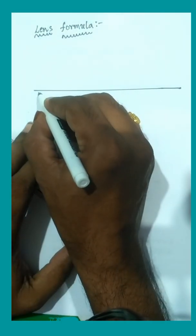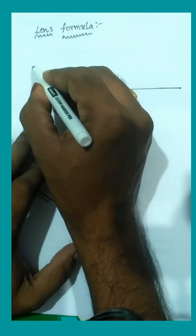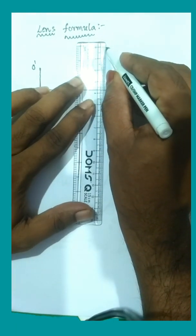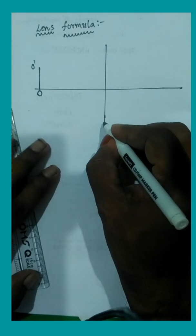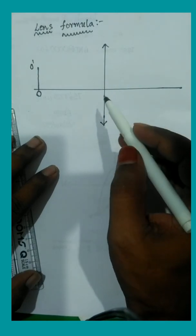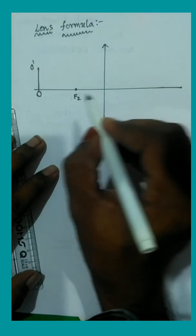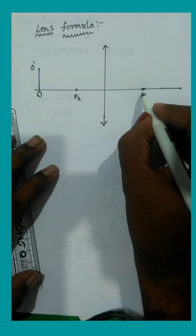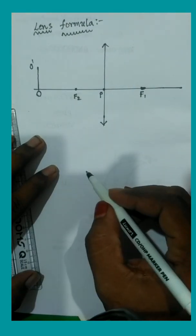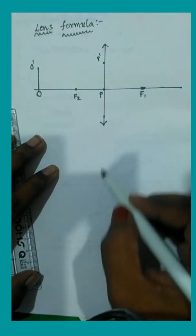Let us choose an object O-O'. O-O' is the object. We have to take a biconvex lens — the representation of the biconvex lens is arrows pointing outwards. We choose focal points on both sides, F1 and F2. P is the optic center, and P' is a point we choose on the lens.